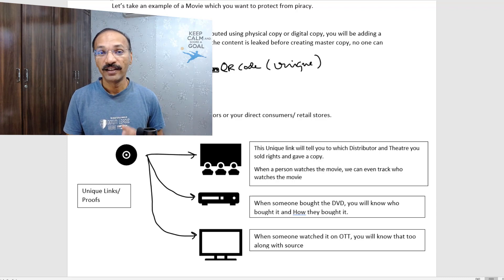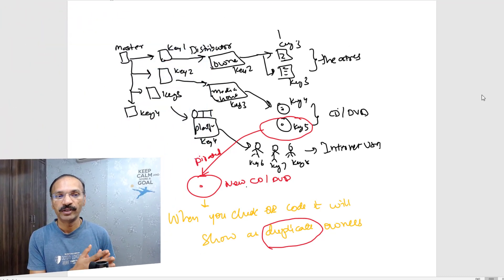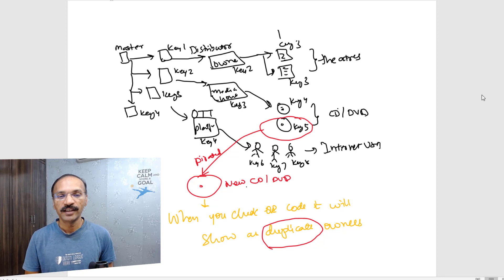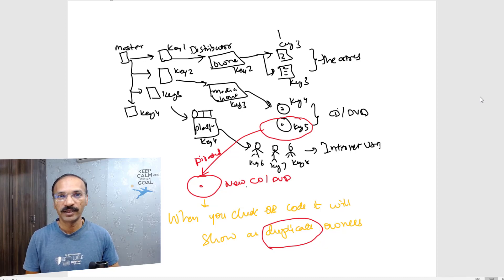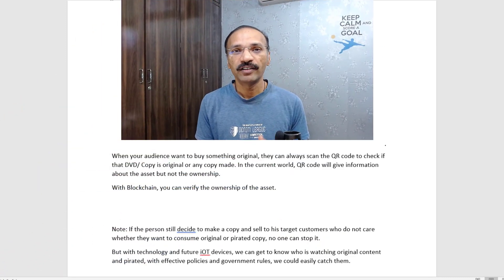Let's talk about what happens when someone makes a copy. You give the copy to three or four distributors, recording each key in the chain — we call it a Merkle tree. In that chain, let's say key five gets pirated and someone makes a duplicate. How do you detect it? The moment you scan that QR code, it shows up as a duplicate ownership because that ownership is already registered. If there are multiple copies of the same key, it easily flags a possible pirated copy.